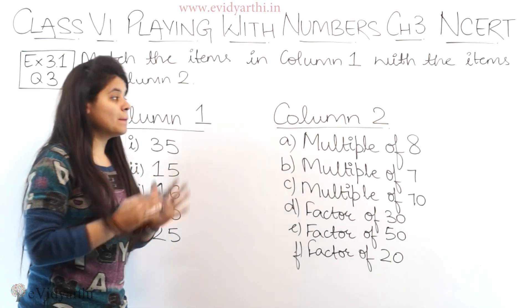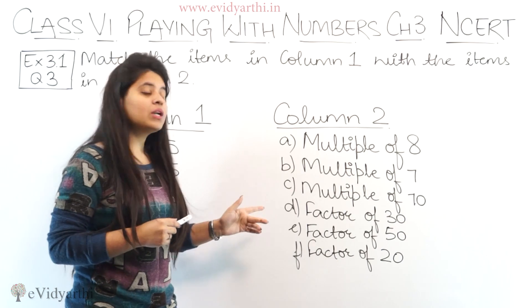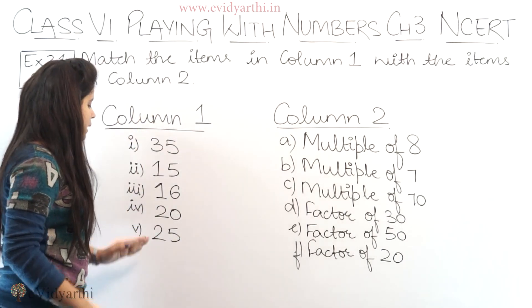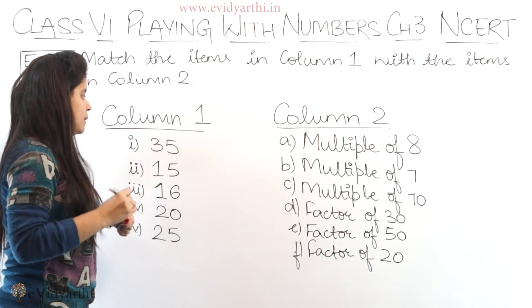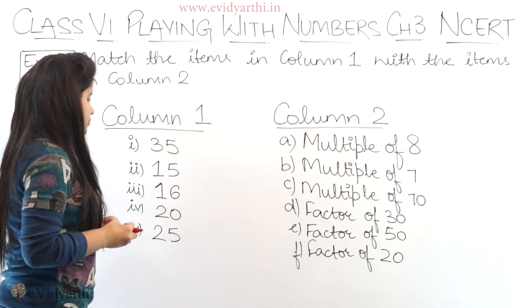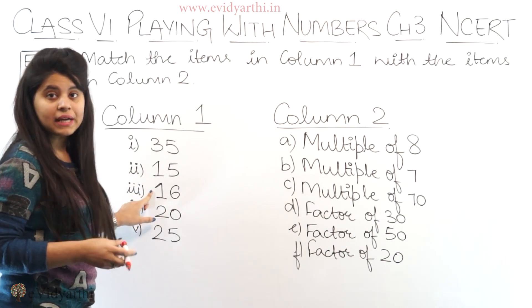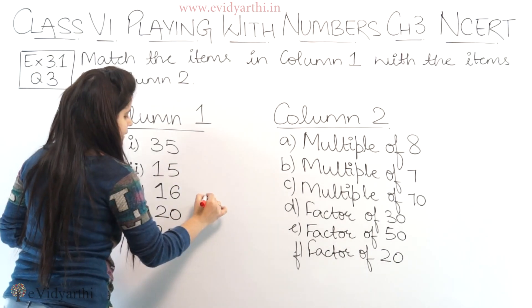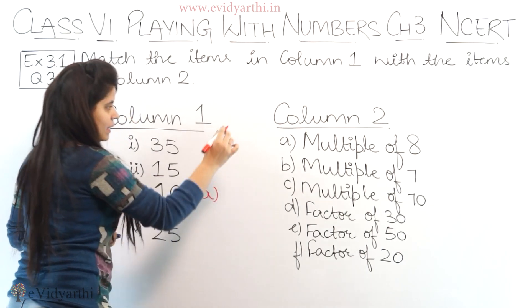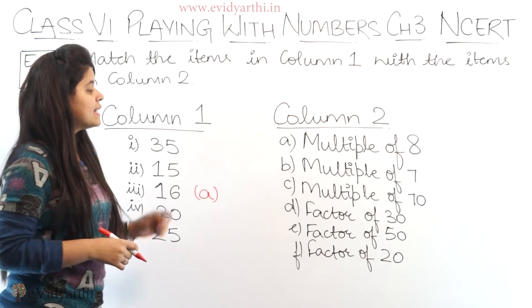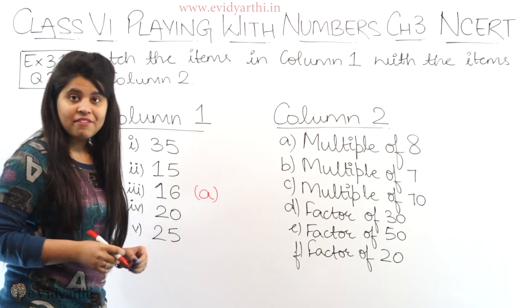Like part a, we have multiple of 8. Multiple of 8 means what comes in the 8 times table. Looking at the numbers here, 35 doesn't come in 8's table, 15 doesn't come, 16 doesn't come, 20 doesn't come, 25 doesn't come. So this means clearly 16 will be part a, the multiple of 8.